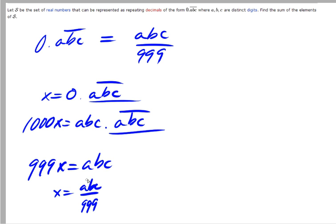where abc represents digits, not variables. So this isn't a times b times c, but abc as a three-digit number. Okay, that's a nice result.